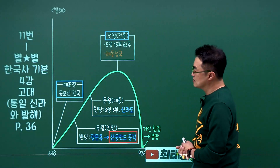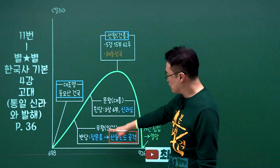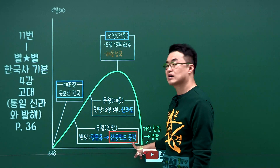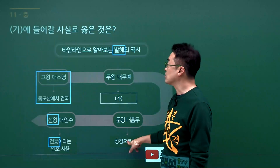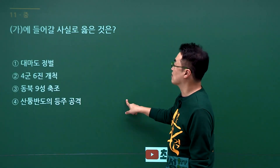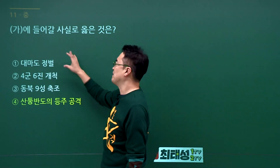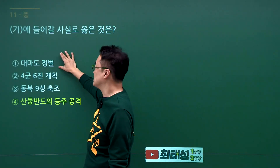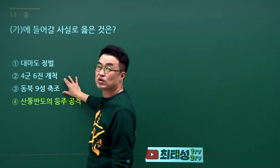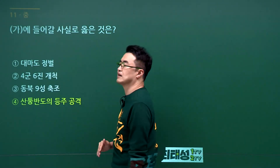발해 무왕 문제입니다. 발해 무왕이 산둥반도를 장문휴를 통해 공격했습니다. 문제에서 발해 무왕이 무엇을 했느냐는 물음에 정답은 산둥반도 등주 공격입니다. 대마도 정벌은 조선시대 세종 때였고 사군 육진도 세종 때였으며, 동북9성 축조는 고려시대 윤관과 별무반이 담당했습니다. 정답은 4번입니다.